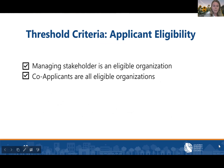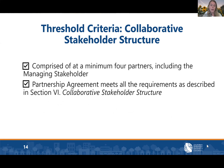For applicant eligibility, just double-check that your managing stakeholder and co-applicants are eligible organizations — you can refer to the eligible applicant list on page 14 of the guidelines. For the collaborative stakeholder structure, you must include at least four partners including the managing stakeholder. If you submitted a pre-proposal with fewer than four partners, you'll need to add additional partners for the full application. Revisit pages 16 and 17 of the guidelines to ensure your partnership agreement includes all requirements, and consider using the partnership agreement template in the application packet.